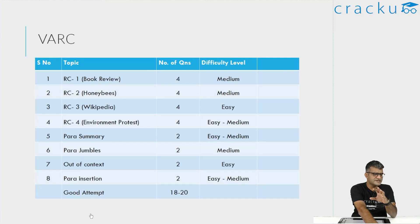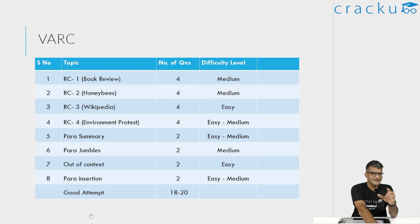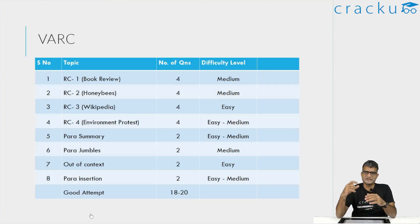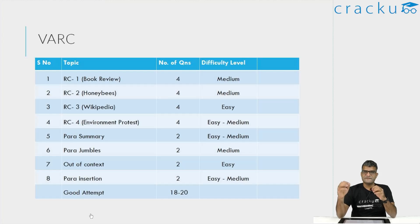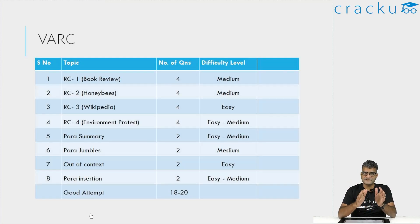Categorizing them by difficulty, the Wikipedia RC was definitely very straightforward. Even the questions were not inference-based — there were four questions, but they were more about understanding examples or different paragraphs in the passage. Inference-based questions such as 'which of the following would the author not agree with' are what most CAT aspirants find difficult. But in the Wikipedia RC, there were no inference-based questions, and the passage was easy to read, making it the easiest passage.